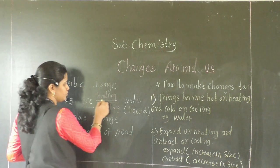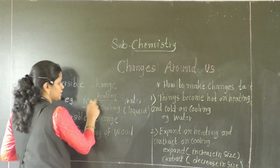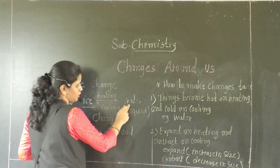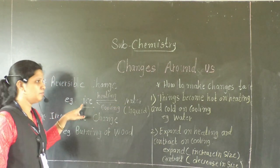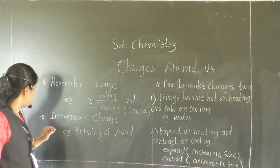Here, two arrows show the process. The first is the heating process: ice converts into water. And on cooling, water converts back into ice.